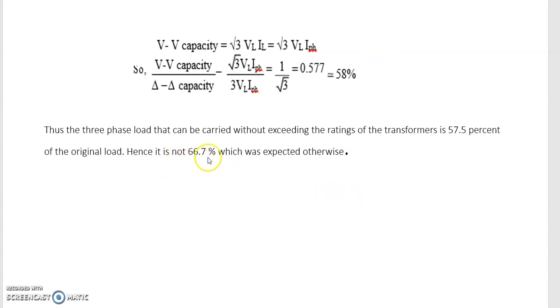Hence, it is not 66.7 percent which is the usual case in delta-delta capacity. It becomes 57.7 percent in case of V-V capacity.